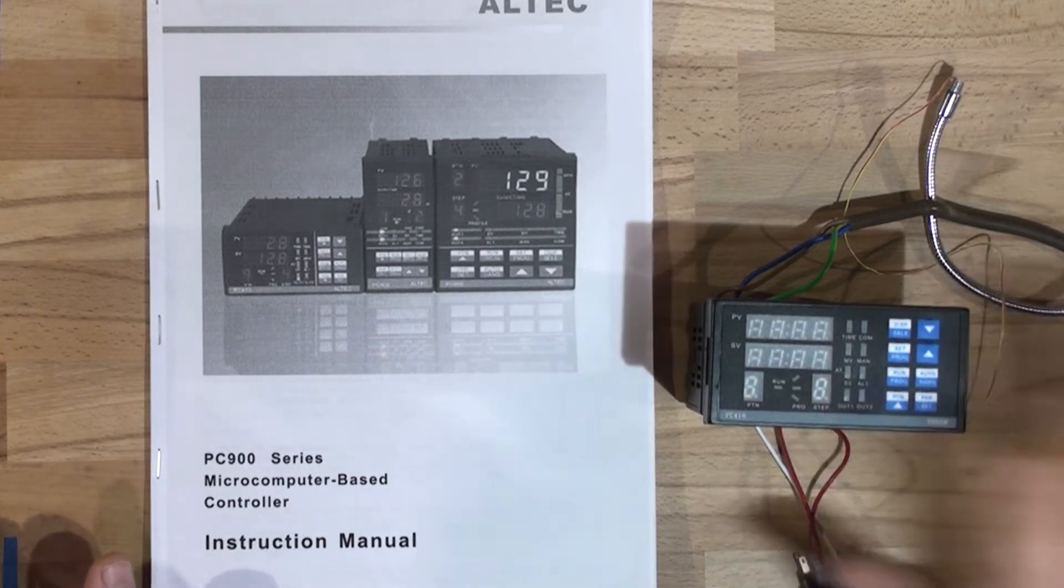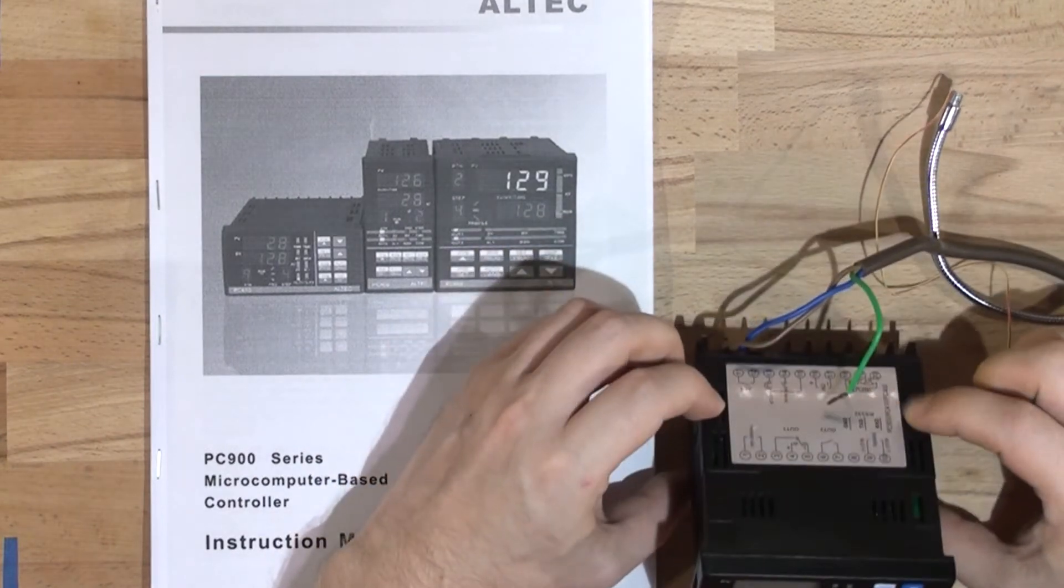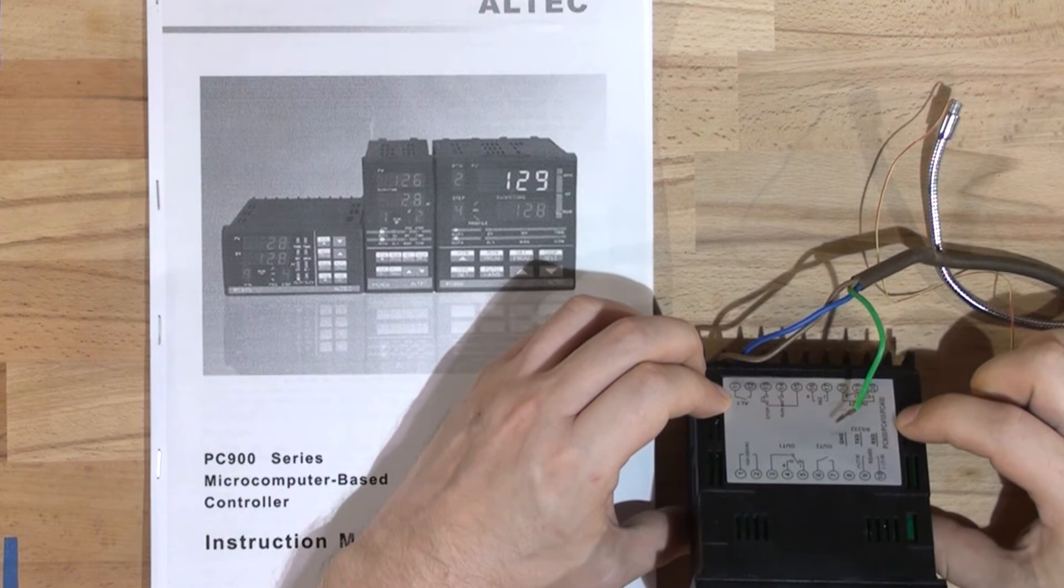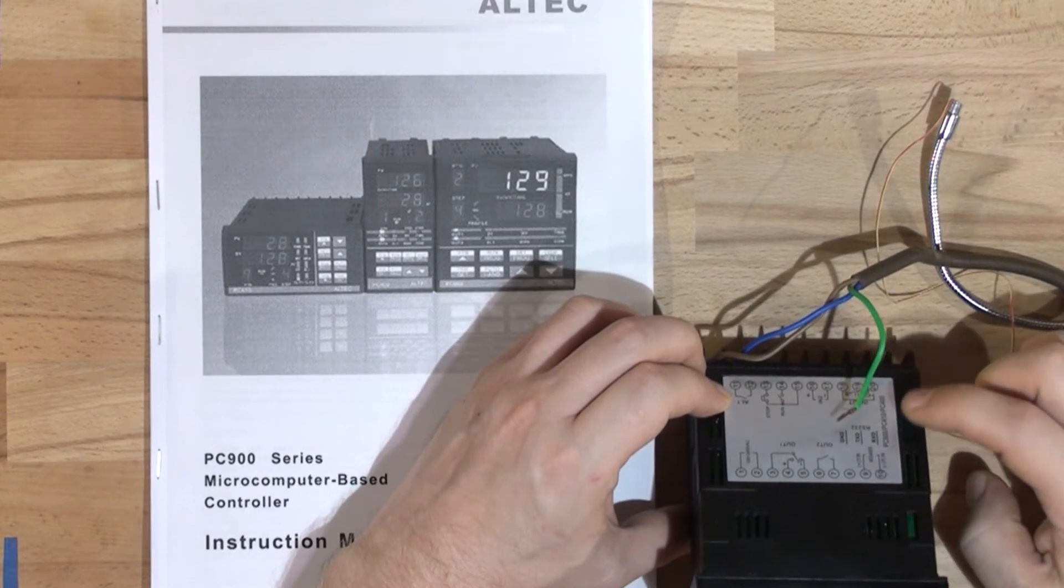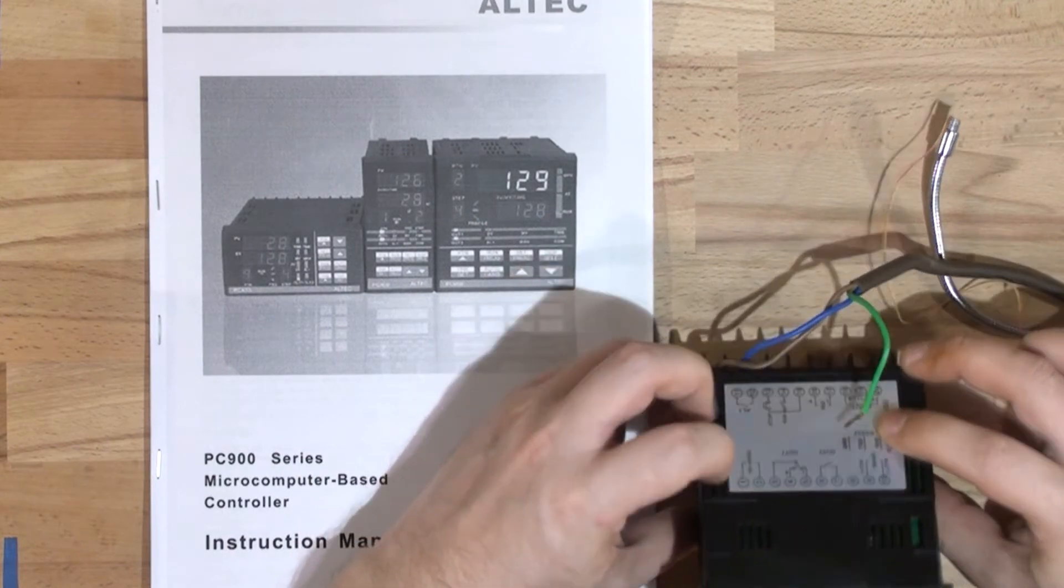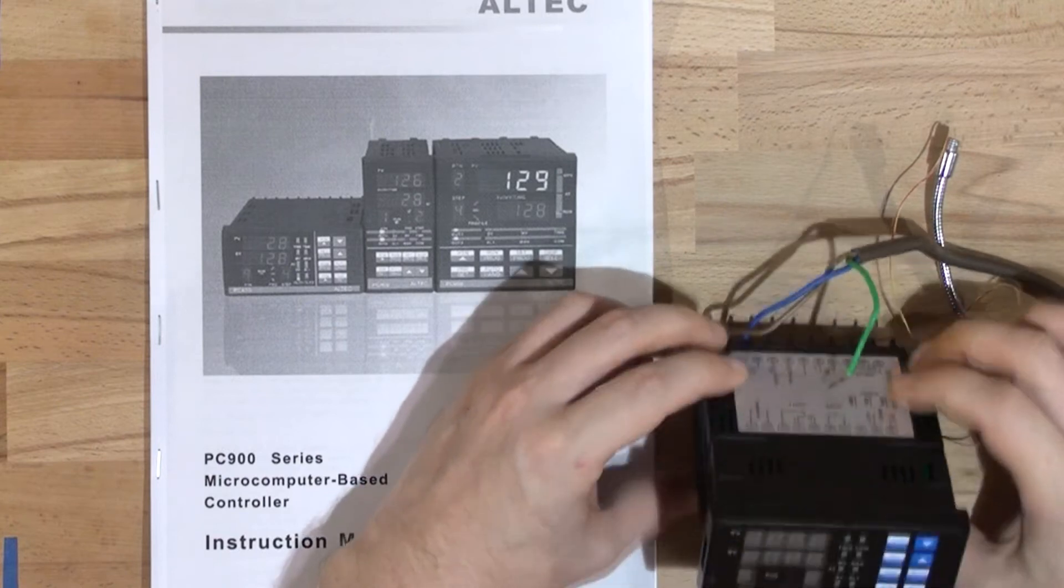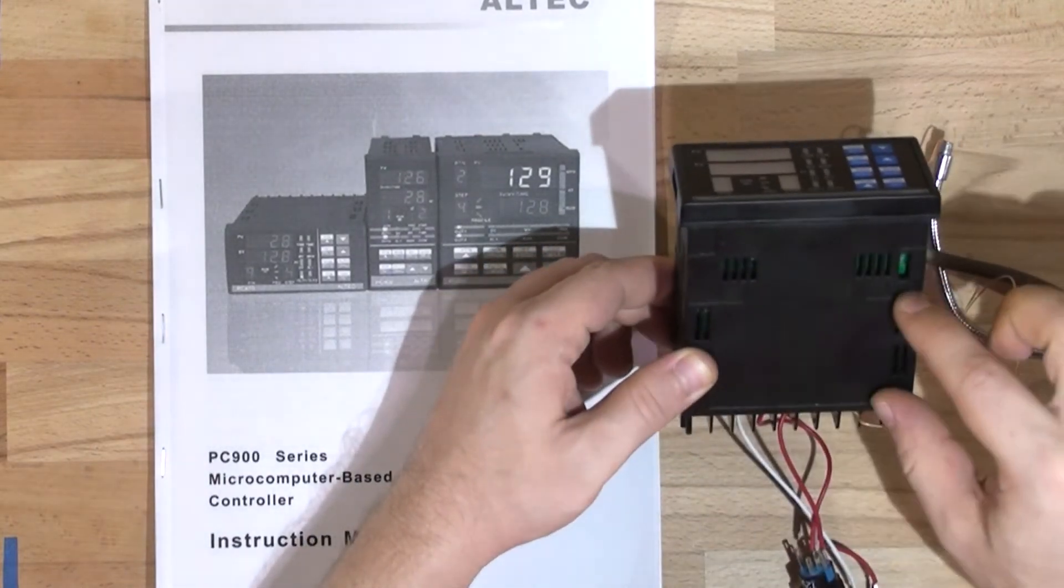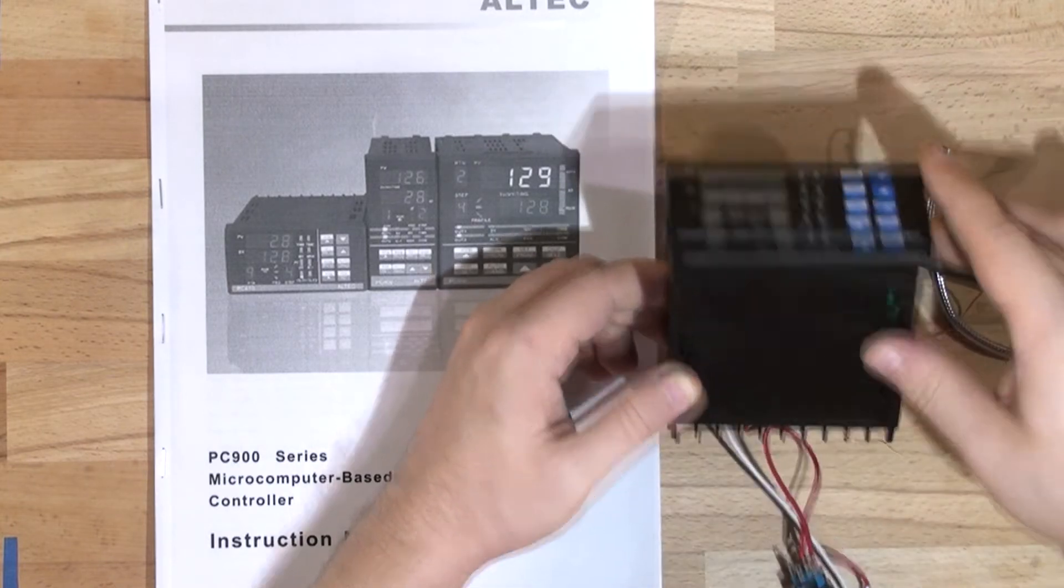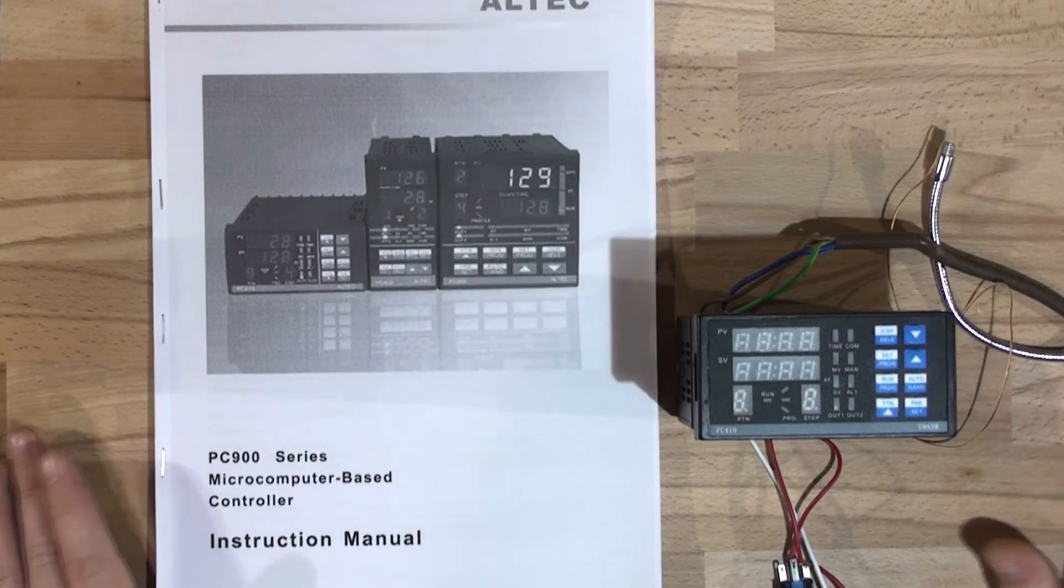So how you can spot that it's a fake before you buy: if you look on the back here, you just got the white sticker saying PC900, PC410, PC400. The original would just say PC900, and the sticker will be black, not white or silverish. The back will have a white sticker with the specs on it saying 240 volts and all that stuff. This one doesn't have anything.